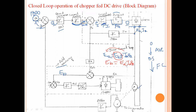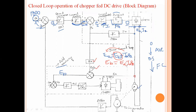We have already taken the armature current using a current sensor. This armature current is multiplied with an R_A gain block, which equals the armature resistance, producing an I_A × R_A signal. Similarly, a voltage sensor is used to sense the armature voltage E_A. Then, using a summer with plus E_A and minus I_A × R_A, we get the back EMF signal E_B.